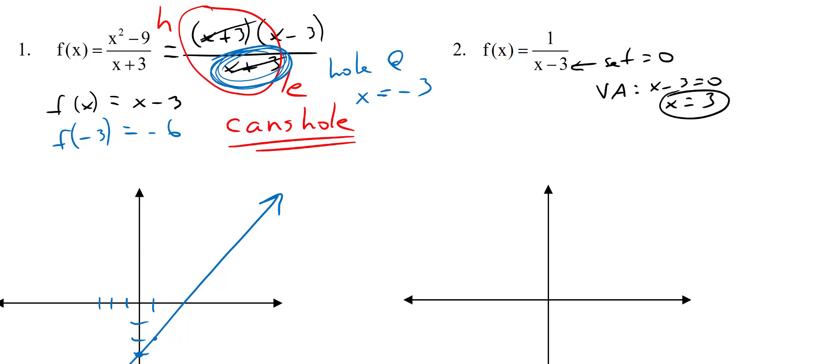I require that you say x = 3, not just 'three,' because three what? Three chickens? Three elephants? You have to say x equals three — it's an equation. A vertical asymptote is a vertical line, and a vertical line is an x equals statement.